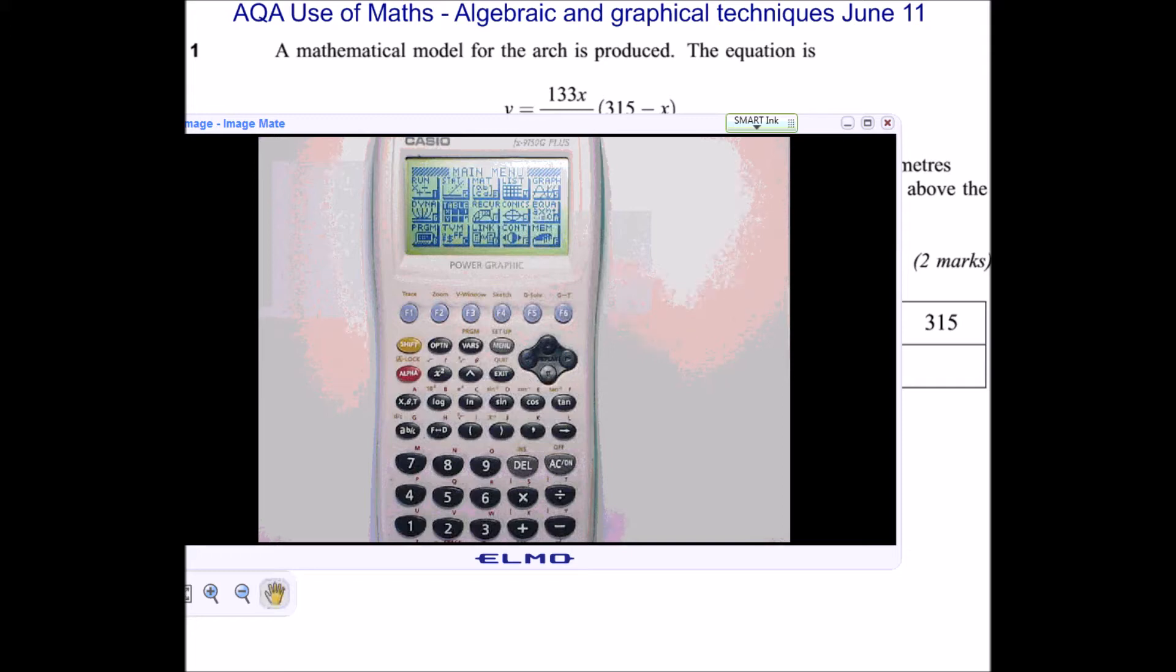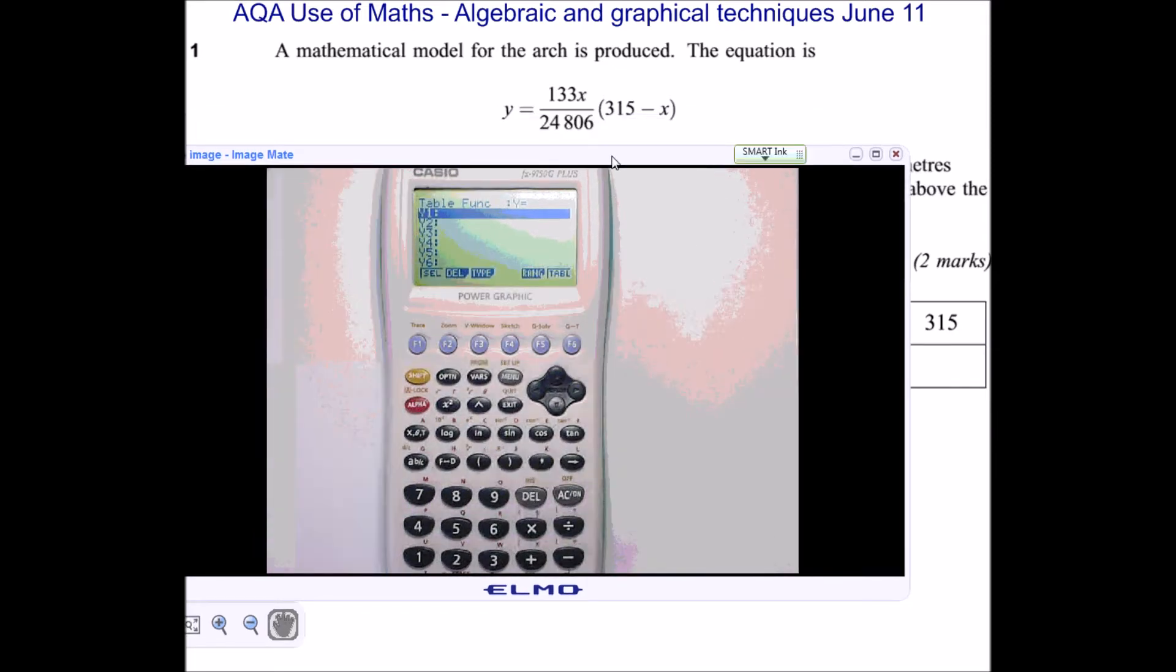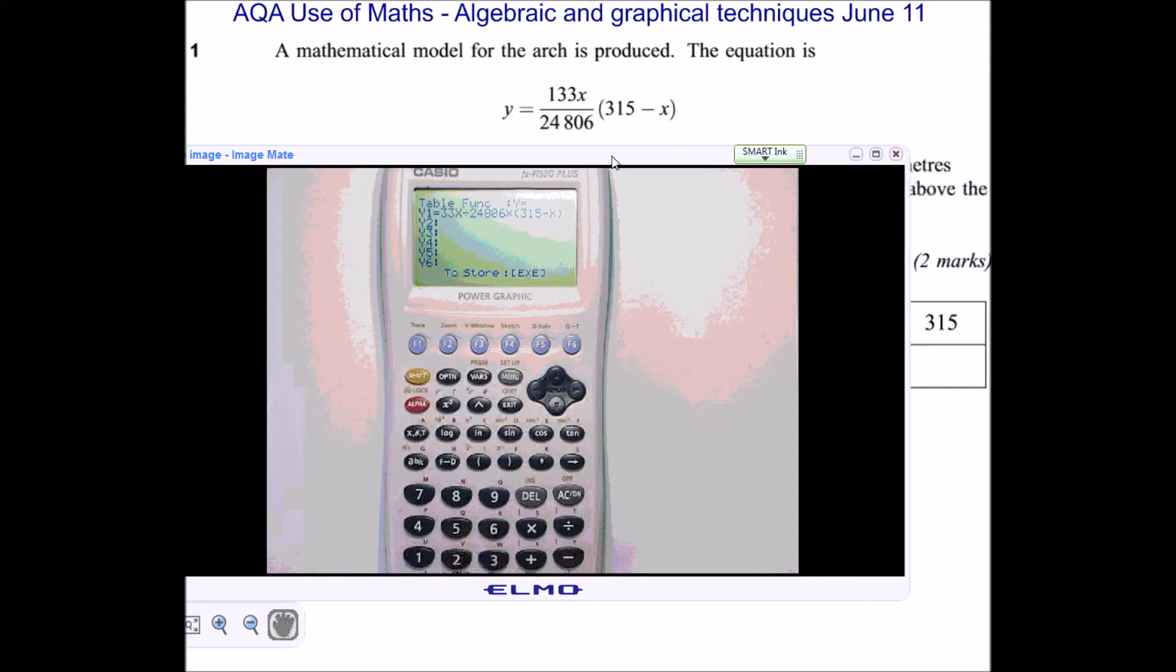So we're going to go to 7, we're going to go to our table function. And you can see that there's an equation already there, but it's not the right one. So we're going to get rid of that. So I'm just going to do delete. Yes, I would like to get rid of that whole equation. And now we're going to enter in the equation which we're given. So you can see we've got 133x divided by 24,806 times and then we're going to do our 315 minus x. Let's just check if we've entered that correctly. That's looking good. And now I can press exe.